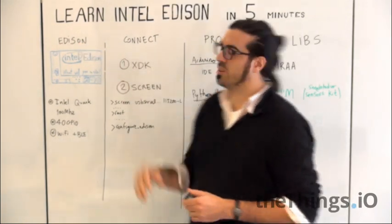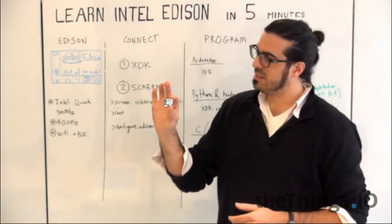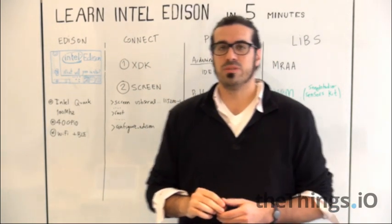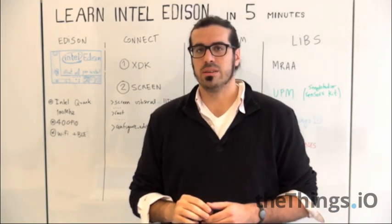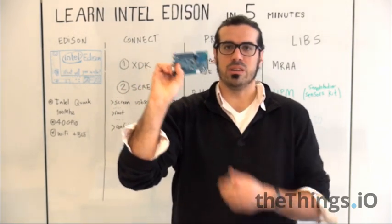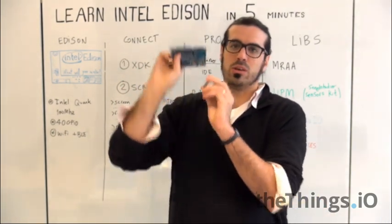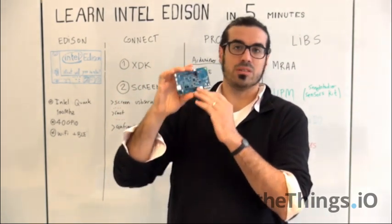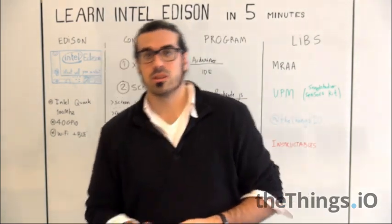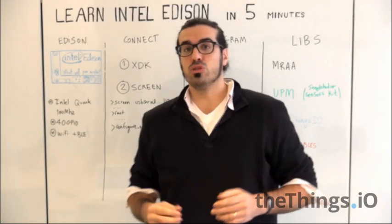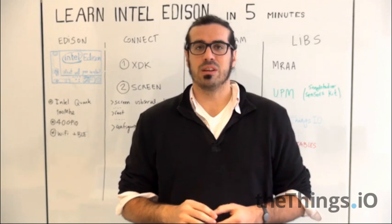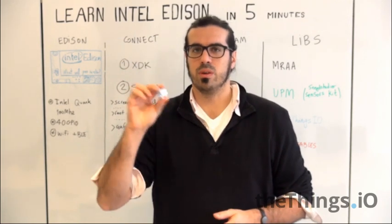First of all, I would like to introduce the Edison. The Edison is this size and actually brings two different kinds of official Intel breakouts. One is this Arduino breakout, which is quite big but has the same pins as an Arduino, or a mini breakout that Intel is also selling. If you go to Sparkfun, you can find several breakouts that Sparkfun taylor-made for the Edison.